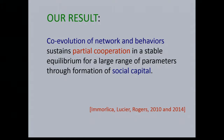In our paper, what we show is that the coevolution of networks and behaviors sustains cooperation through the formation of social capital. The neat thing in our model is that we're able to sustain a heterogeneous mixture of cooperation and defection — it's not necessary that the entire society cooperate. We can support, in a stable equilibrium, a fraction of society cooperating and a fraction defecting.